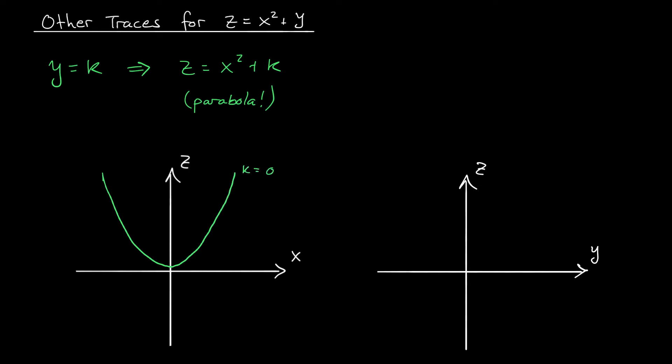So when k is 0, we have the parabola z equals x squared. When k is 1, that parabola moves up. When k is minus 1, that parabola moves down. So we have these upward opening parabolas in the xz plane.